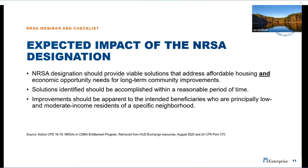The NRSA designation should provide viable solutions that address affordable housing and economic opportunity needs for long-term improvement. The operational term of an NRSA is five years in accordance with the notice. Therefore, the grantee must submit a request for renewal every five years along with an update on what has and has not been addressed and identify what needs to be completed. In addition, the grantee may update NRSA designation to remove areas that have been addressed and add contiguous areas that meet the requirements.